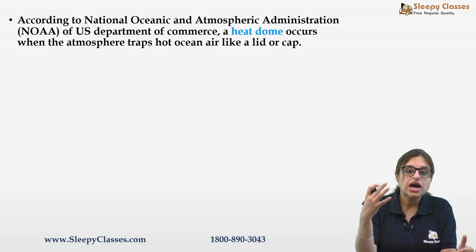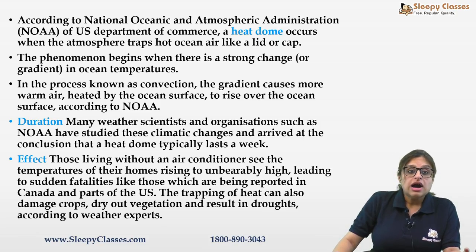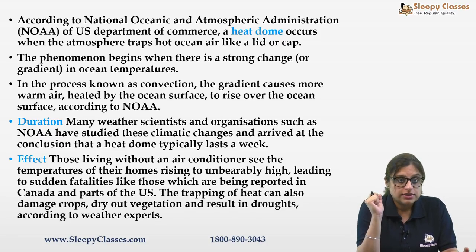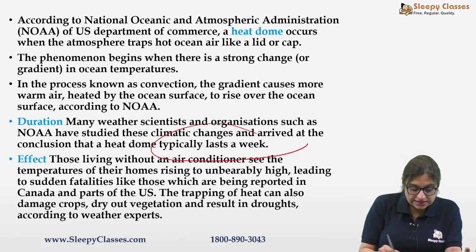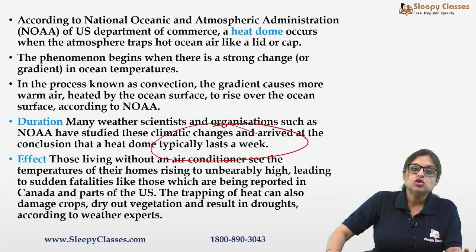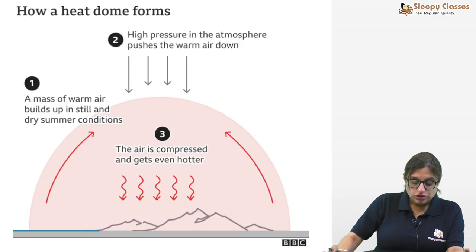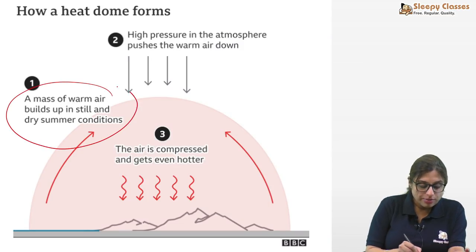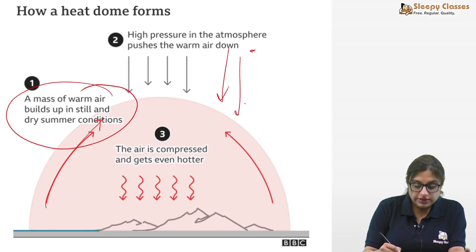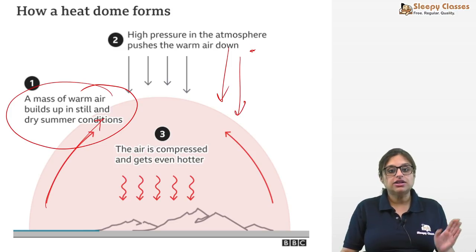A heat dome works like a lid — the atmosphere traps hot ocean air like a cap. Temperatures suddenly increase. It was experienced in North America, which is why it was in the news. It typically lasts about a week. Effects include extremely oppressive conditions for those without air conditioning, wildfires, and drought — all linked to climate change. Mechanically: warm air builds up in still, dry summer conditions, rises, but high pressure pushes it back down, compressing and further warming it, creating a dome-like cap condition.